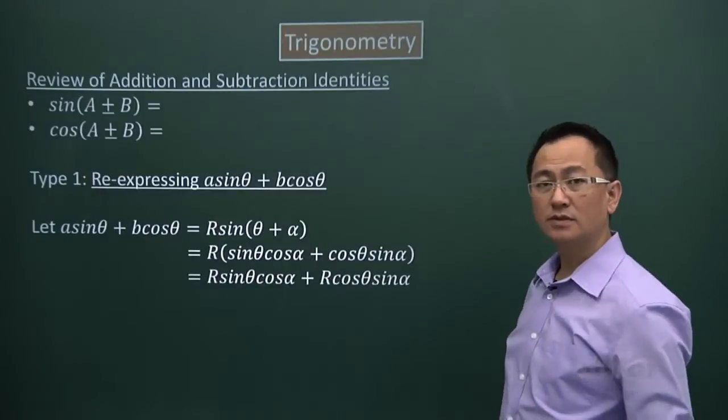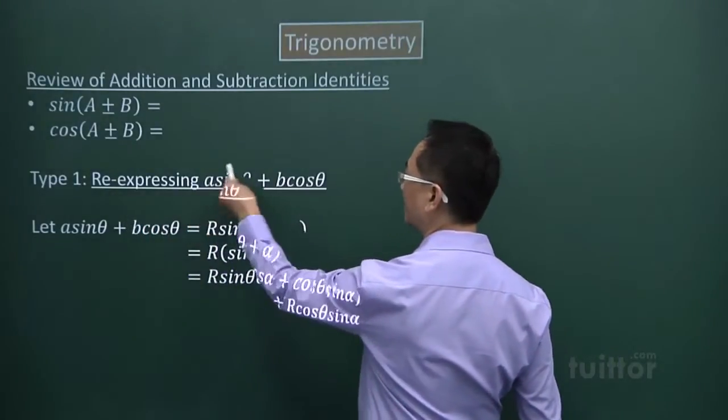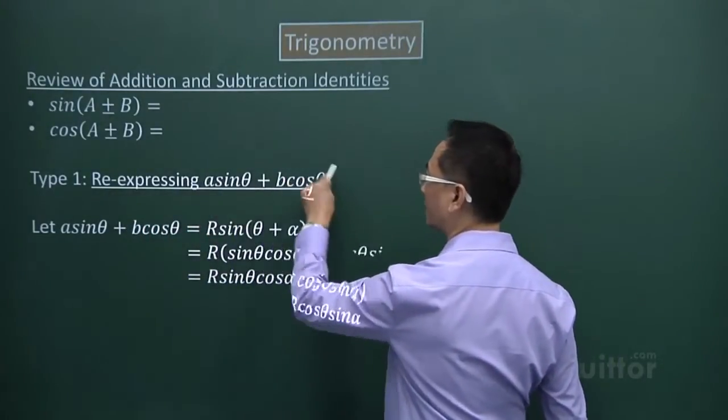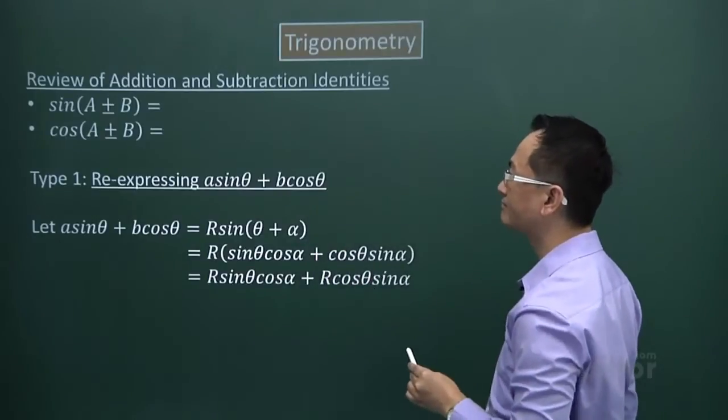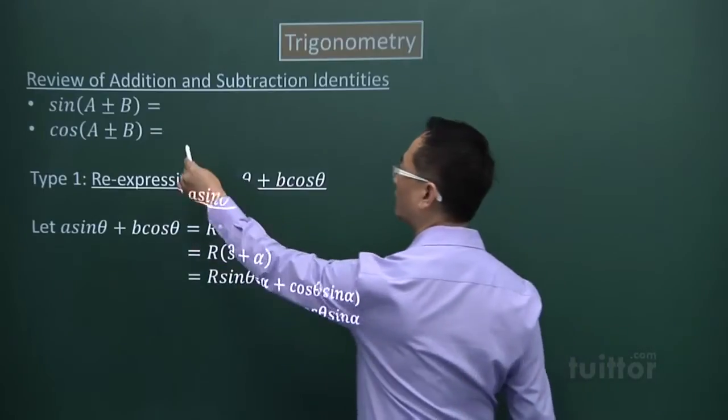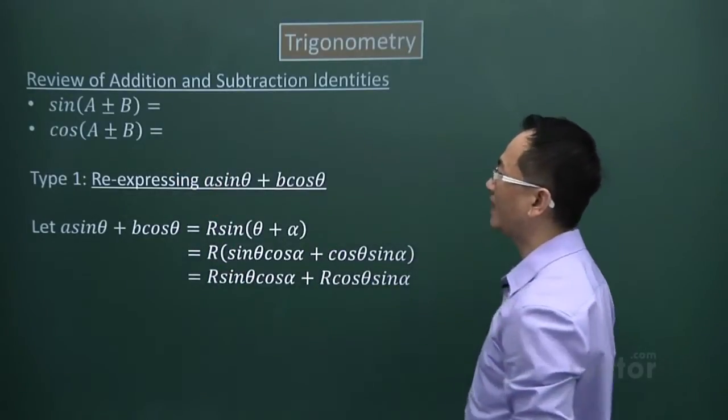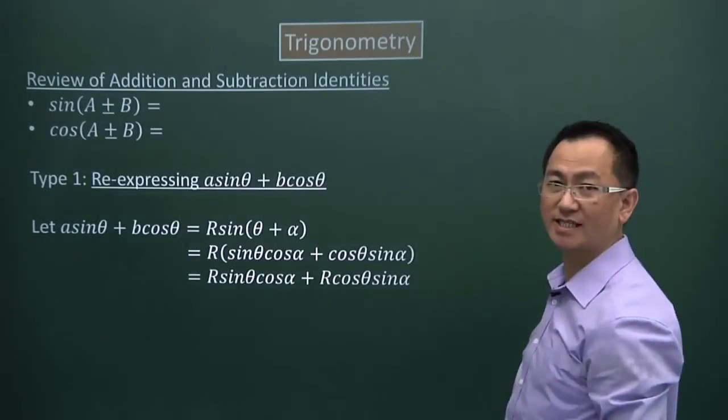Now, to be able to express these trigonometric expressions in a simpler way, we must first review these rules, what we call the addition and subtraction identities.